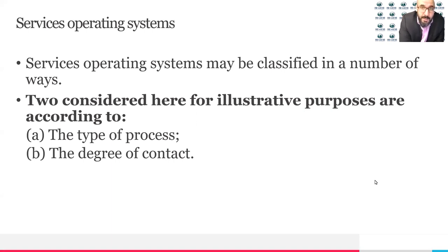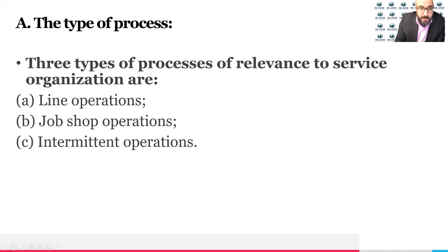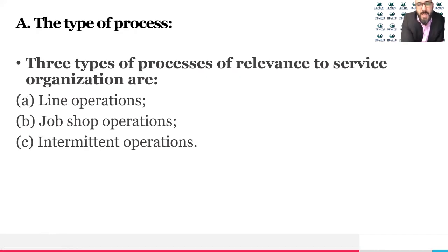The first criterion is the type of process — what it looks like. The second is degree of contact: how often the customer contacts you or how often you need to be in contact with the customer. For the type of process, there are three types in the service industry: line operations, job shop operations, and intermittent operations.